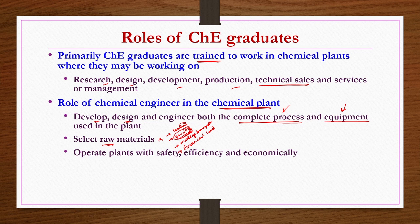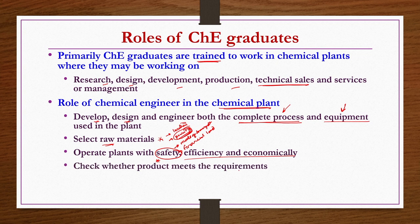Operating plants with safety, efficiency, and economy is very essential. Safety is the most important factor in any chemical plant because anything that happens is not only harmful to personnel working in the plant but also to neighboring people. Also, one must check whether the product meets requirements. Sometimes products like hand wash — which are colloidal suspensions — may settle quickly if there's a quality issue.